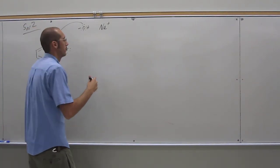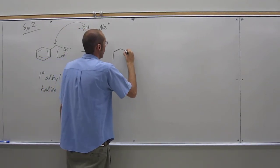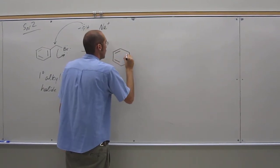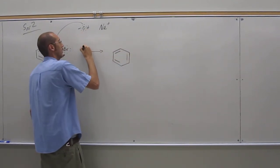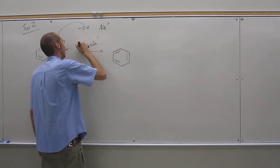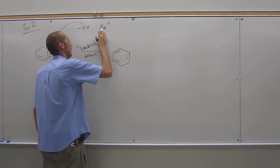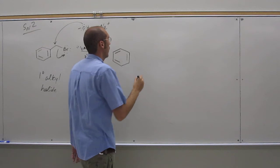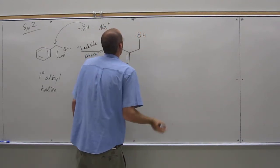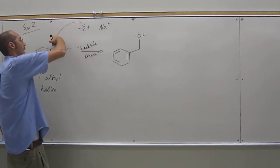So when we do that, I want to actually emphasize the SN2 nature of this by drawing, so we're going to say backside attack. So let's draw the actual nature of what's actually going on here. So if we want to think about it like that, right? It's actually coming from the opposite side.